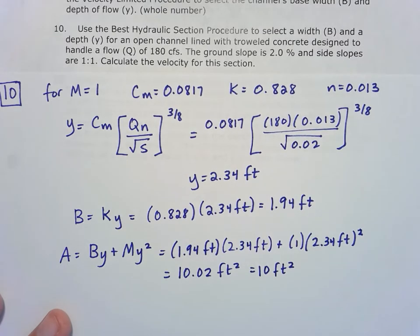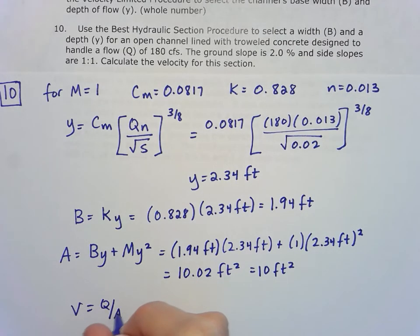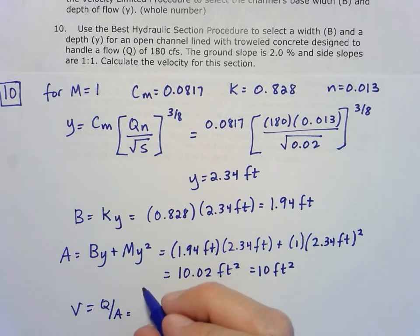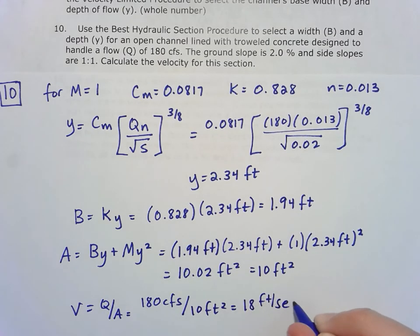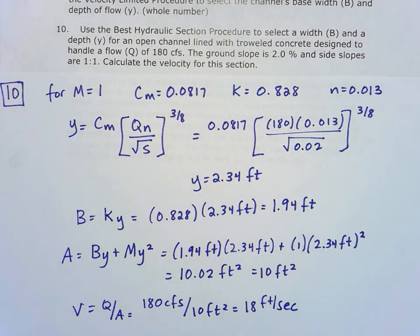And so once I know that that's 10, I can solve for that velocity, because velocity is just going to be flow rate divided by area, Q over A. So I have 180 cubic feet per second divided by 10 square feet, and that is equal to 18 feet per second. So that's our final velocity and final depth and channel width.